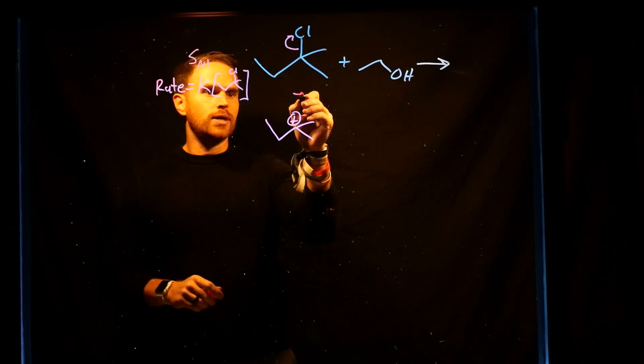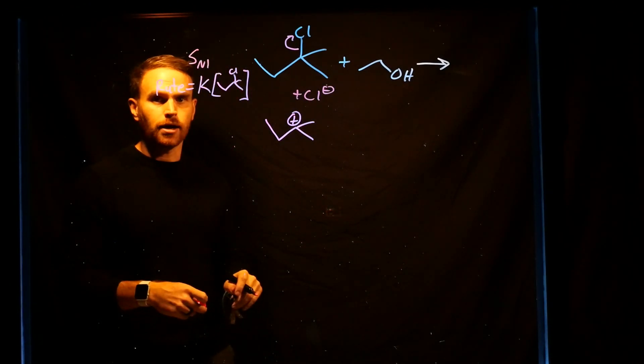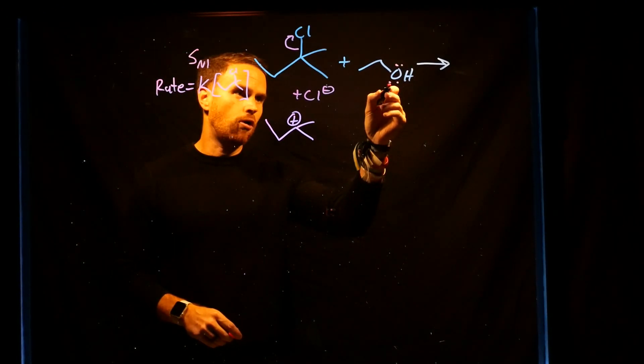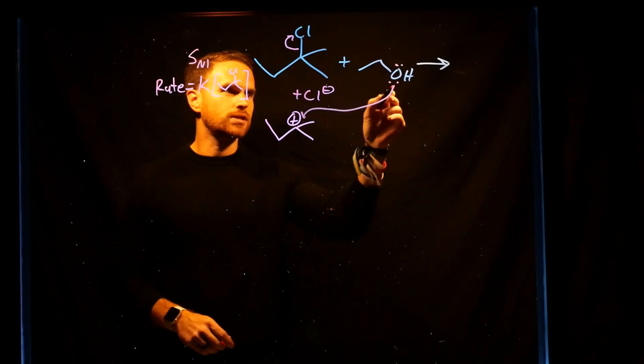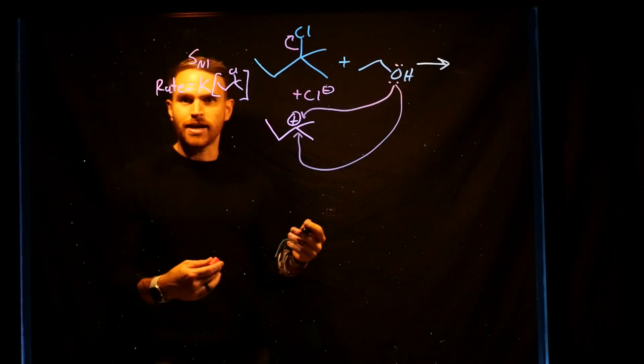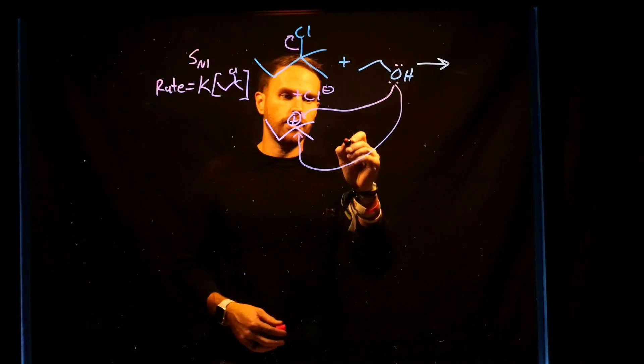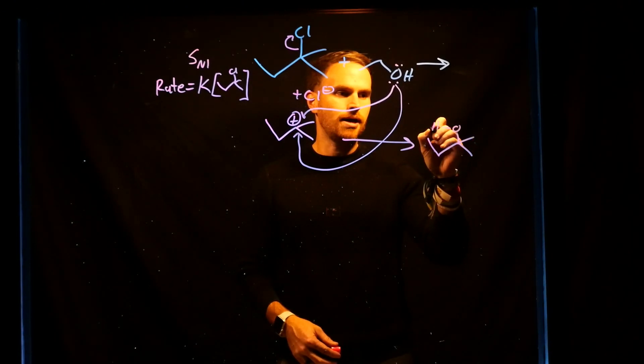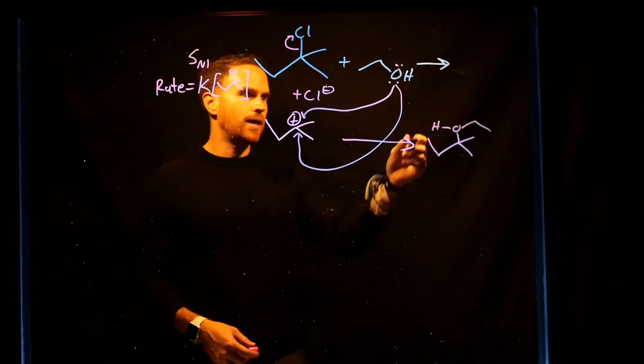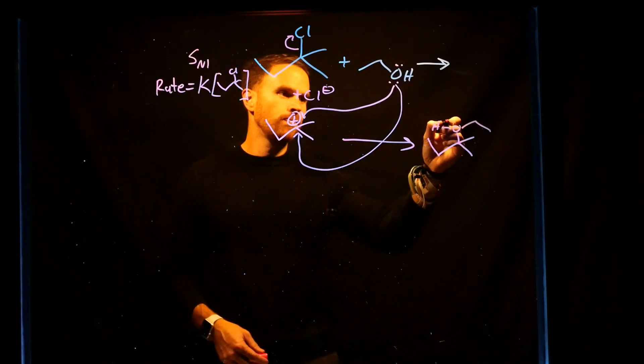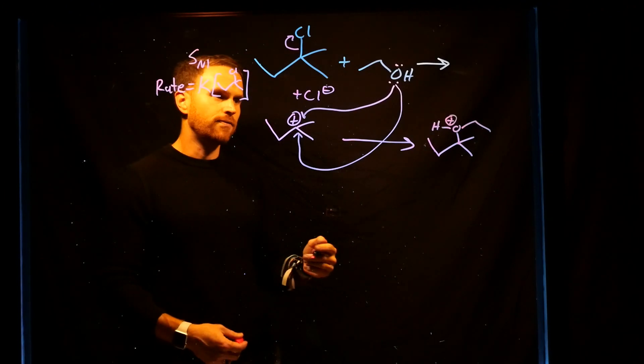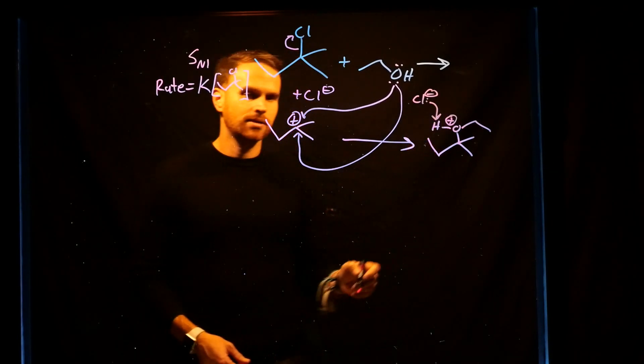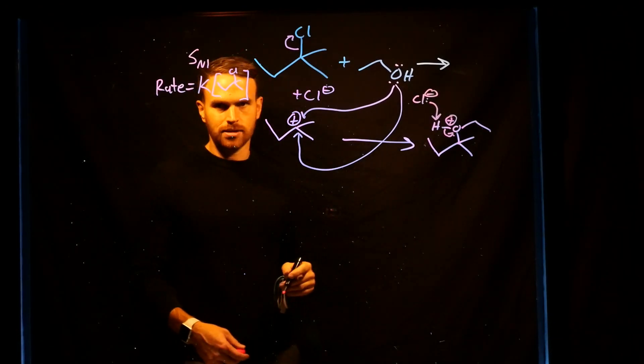Now that we have generated our carbocation after our chloride ion has left, what happens is the nucleophile, the alcohol containing lone pairs, can come in at either the top or the bottom because of that empty P orbital that's generated to form the product. This generates a product that is beginning to look like our final steps. However, notice that now that we have attached this alcohol, we have generated a positively charged ion. In fact, what has to happen is this chloride is actually going to come and abstract this proton and the electrons are going to go back to the oxygen.